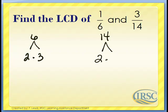The prime factors of 14 are 2 and 7. Now we look at all the factors we have: a factor of 2, a factor of 3, and a factor of 7. Each factor is circled based on the maximum number of times it appears in any one factorization. For 6 and 14, the factor 2 appears only one time, so we just choose one.